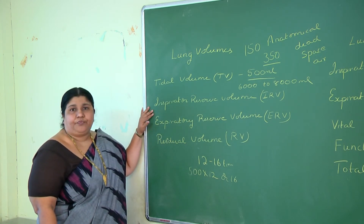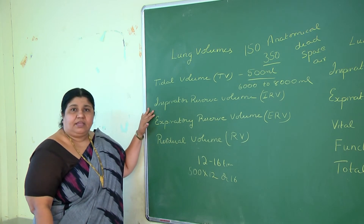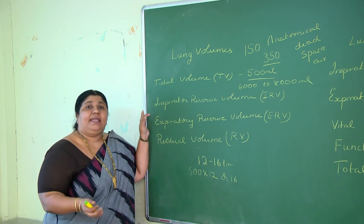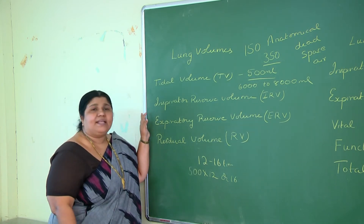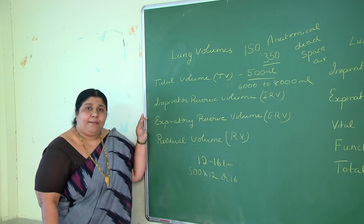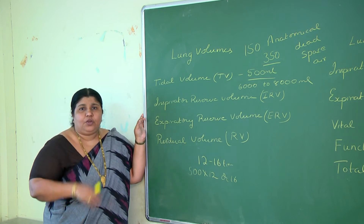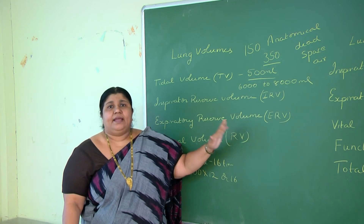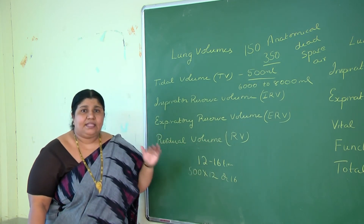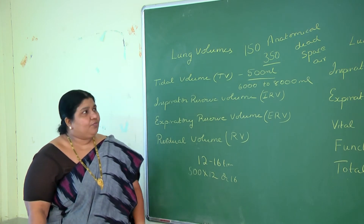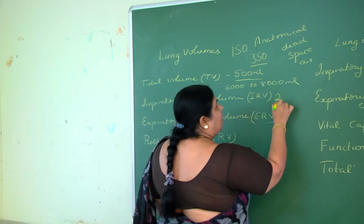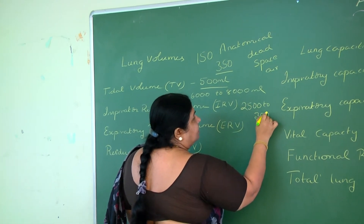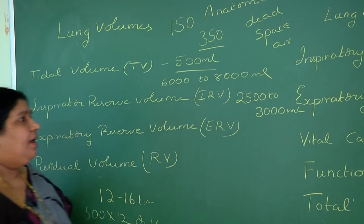Then, what is inspiratory reserve volume — IRV? The amount of air which we inhale forcefully in addition to tidal volume is referred to as inspiratory reserve volume. So when we forcefully inhale, the amount of air above tidal volume is the IRV. The volume given is 2,500 to 3,000 ml — that is the inspiratory reserve volume.